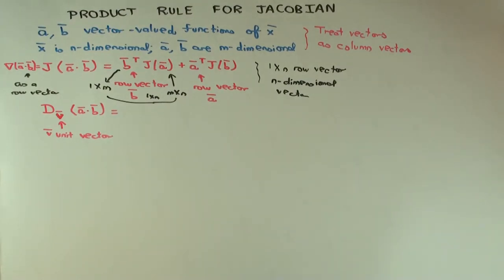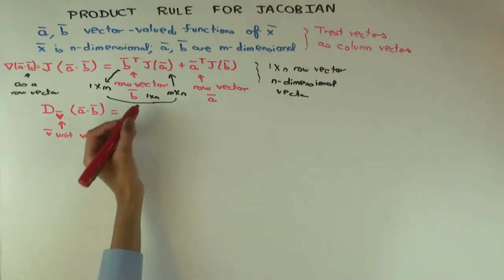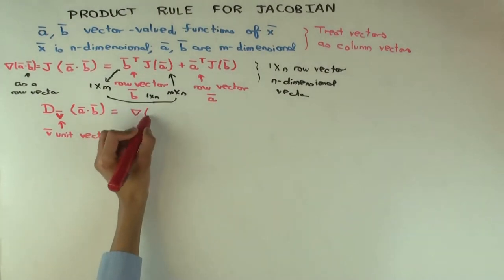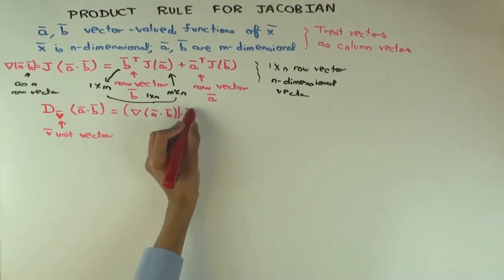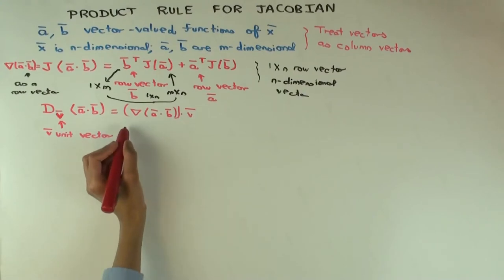Now let's use this to get an expression for the directional derivative of a dot b in the direction of a vector v, where v is a unit vector. So what should that be? What do you know of the directional derivative in terms of the gradient vector? That's a dot product of the unit vector. So it's nabla a dot b dot v.